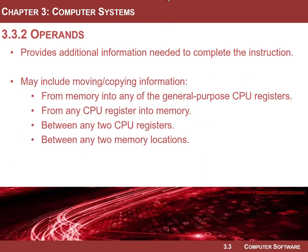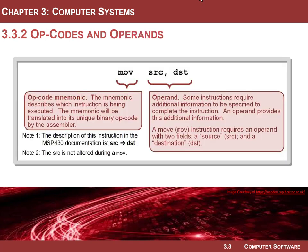There are instructions that require additional information in order to be executed. For example, when you have an add instruction, you need to know what you're adding. That additional information is called an operand. Opcodes and operands are necessary: some instructions might not need an operand, some require one operand, and some require two operands — it just depends on the instruction.